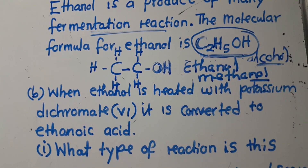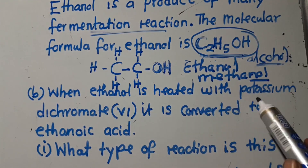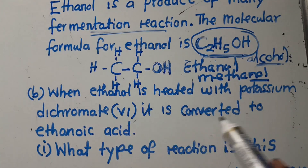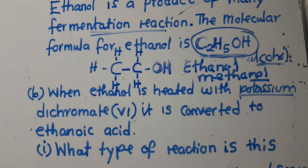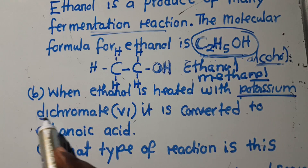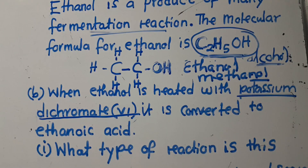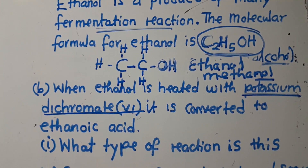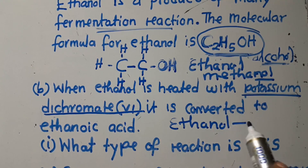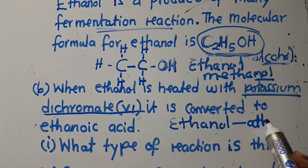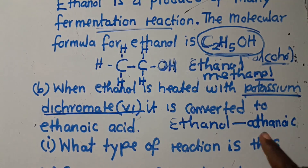We move to the next question. It says when ethanol is heated with potassium dichromate(VI), it is converted to ethanoic acid. So when ethanol is heated with potassium dichromate(VI), this acts as a catalyst. A catalyst speeds up or slows down a chemical reaction without being changed — it remains unchanged even when the reaction has stopped.